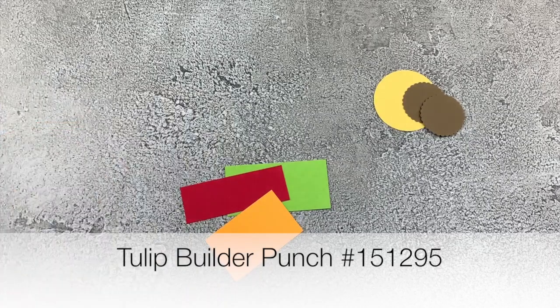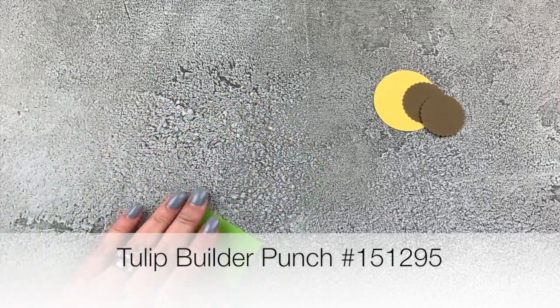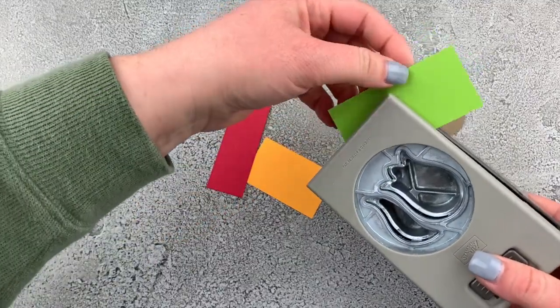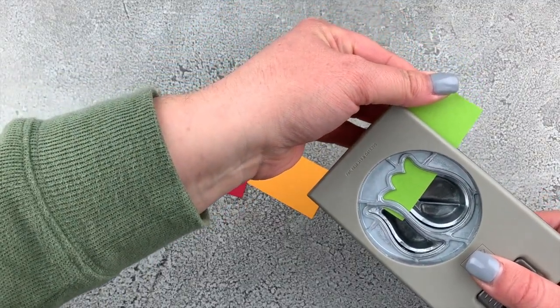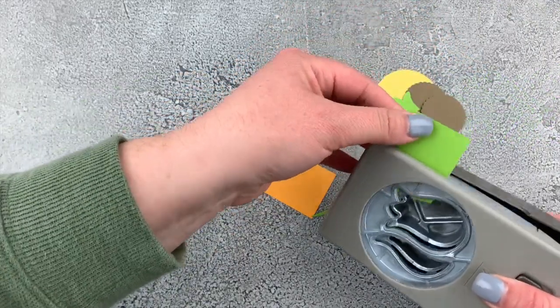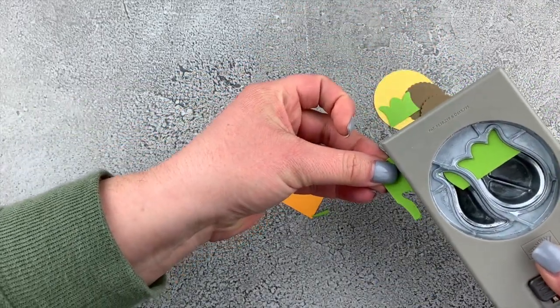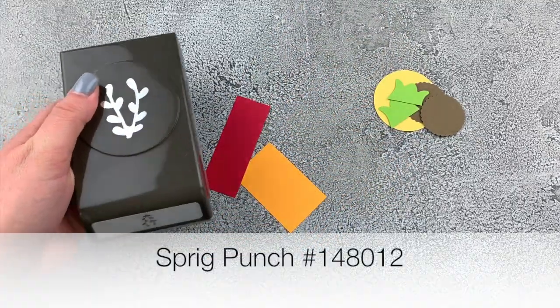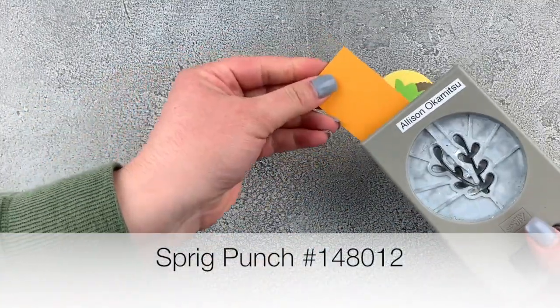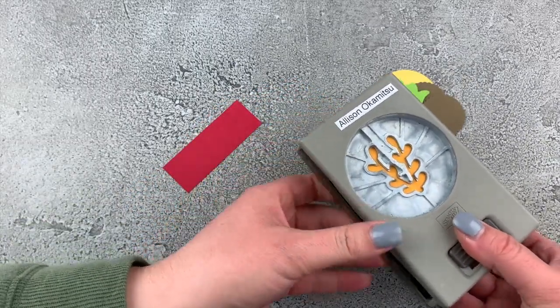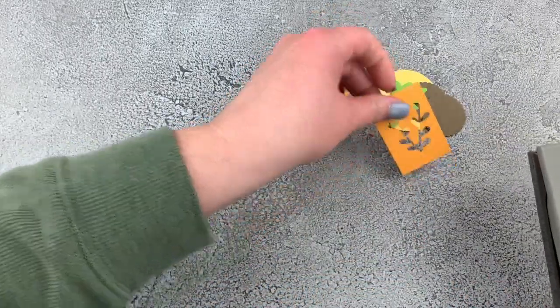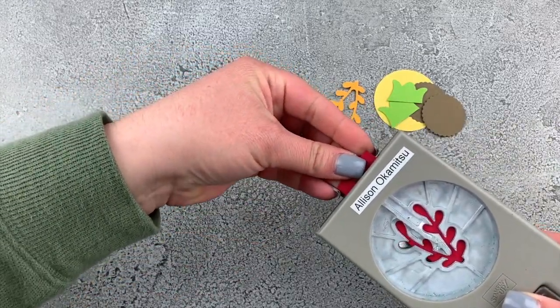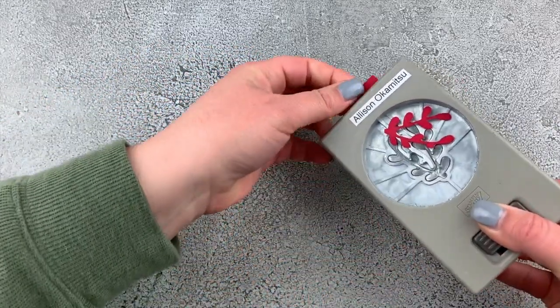I've got the Tulip Builder Punch here, and I'm just going to punch out the top pieces from the Granny Apple Green cardstock. I don't need the whole tulip, just the top. Then for the Sprig Punch, I need the Mango Melody and also Real Red.